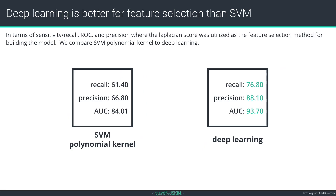To explain why we ended up with deep learning: when we started, we used a polynomial SVM kernel that had a lot of feature engineering. As you can see, what we got with deep learning using far fewer features was much better than what we got with our polynomial SVM kernel that used many more features.